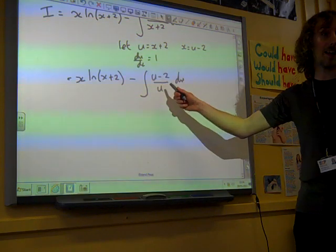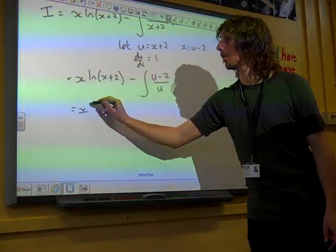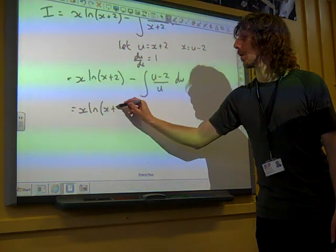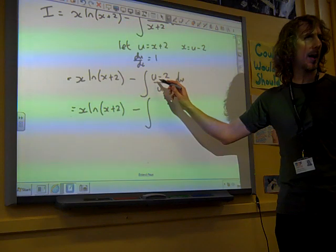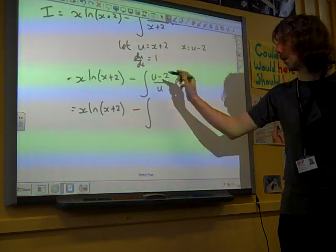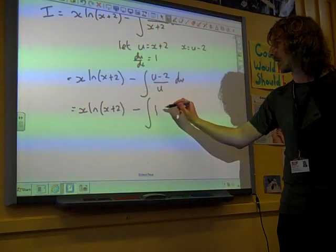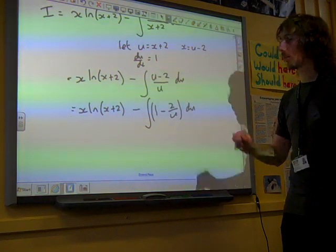And the purpose of doing that is that that is now a lot simpler than it was before. We've now just got the integral. If we split up that, that's u over u, which is one, minus two over u. That's two over u, du.